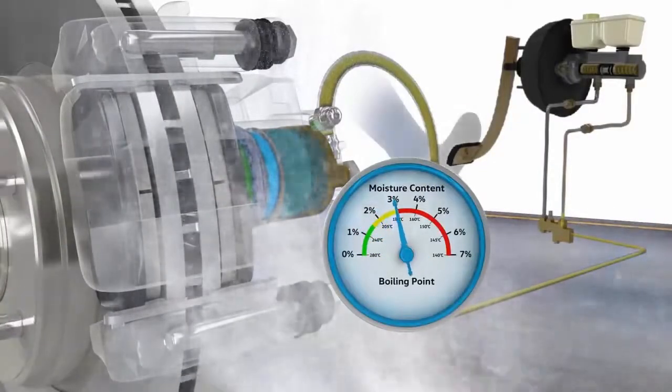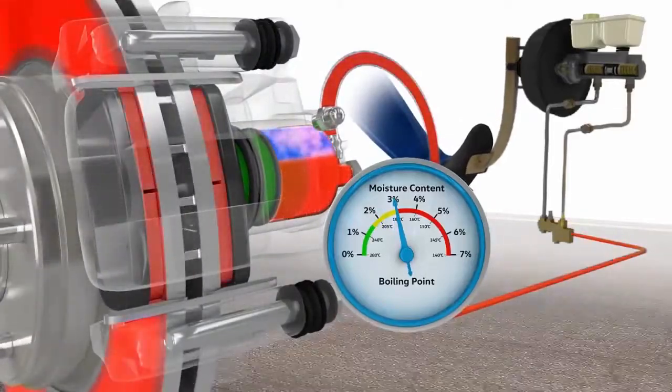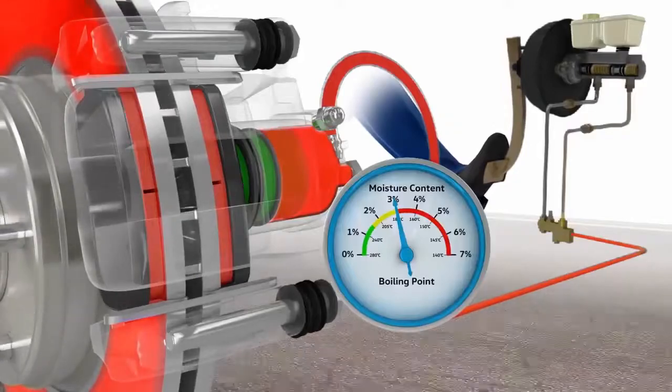A higher moisture content means the brake fluid boils at lower temperatures, resulting in a spongy feel in the brake pedal and increased braking distances.